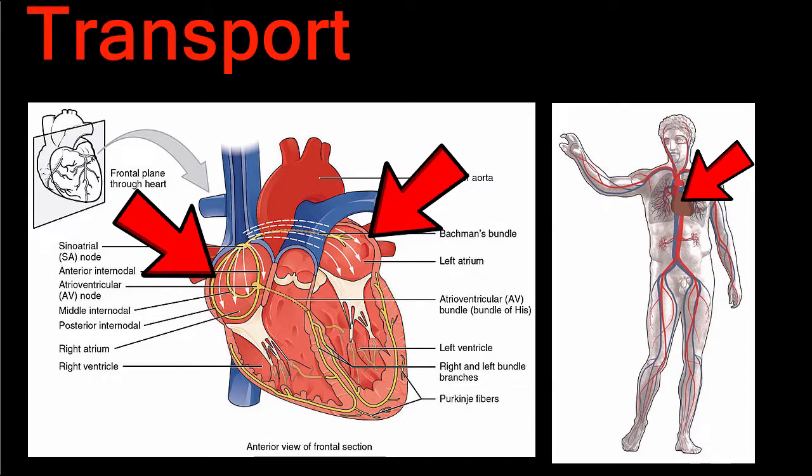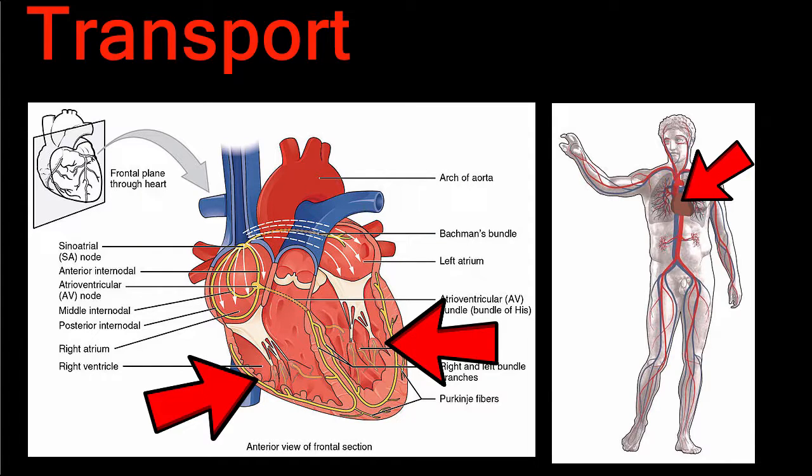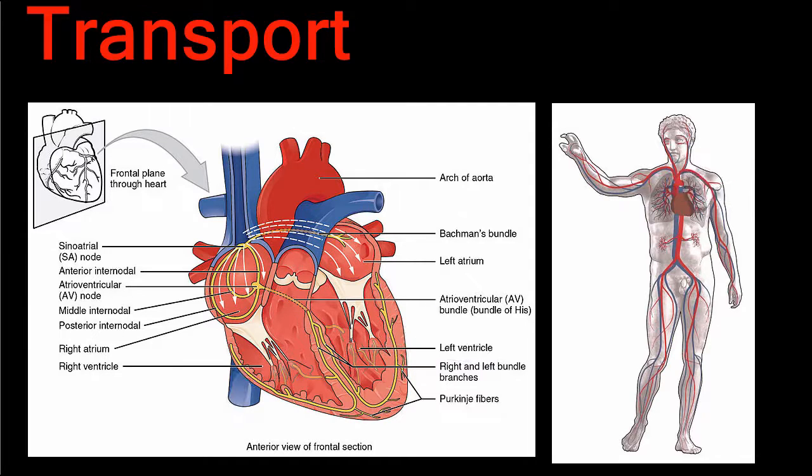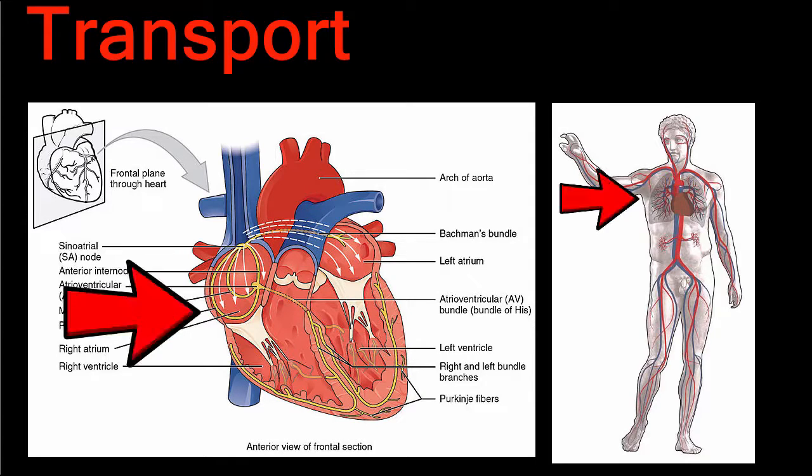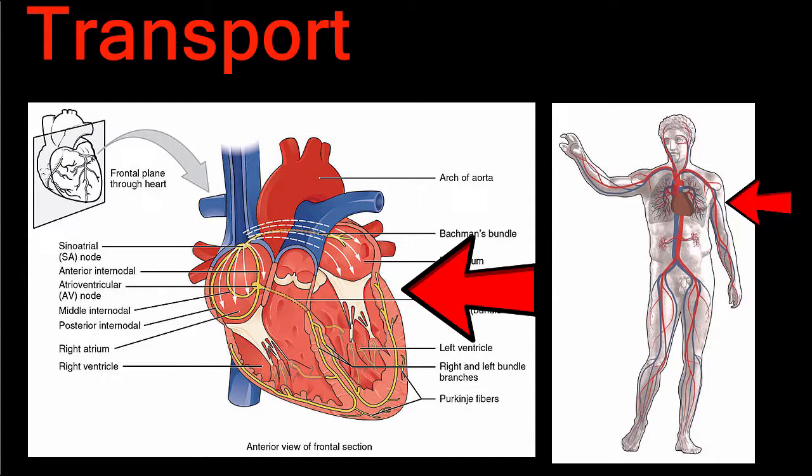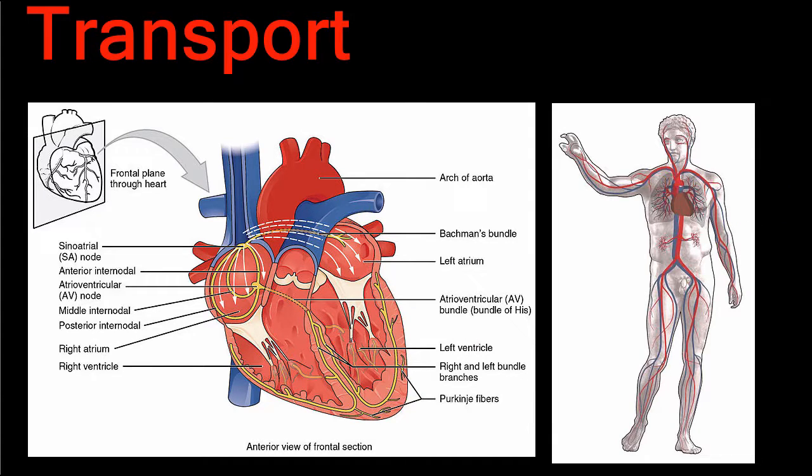The atria are at the top of the heart and receive incoming blood. The ventricles are on the bottom and are responsible for pumping blood all over the body. The right and left sides of the heart are named based on the fact that we are facing the person whose heart we are examining. The person's left atrium and ventricle are found on our right. It's a little confusing, but still logical.